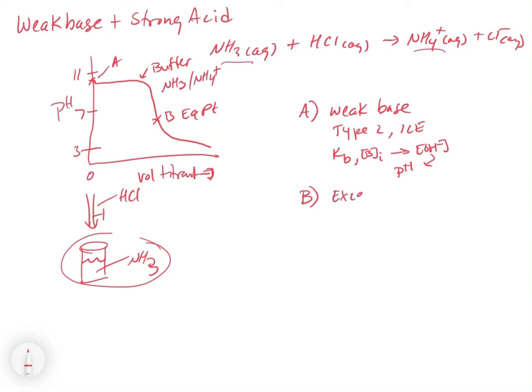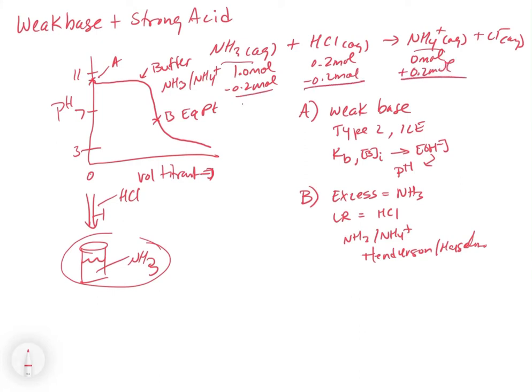What we're going to have here is we're going to have a mixture of ammonia and NH4+, so our excess reagent is going to be our NH3. Our limiting reagent is going to be the HCl, and so we can use Henderson-Hasselbalch. Let's prove that this is the case. Let's say that we have 1.0 moles of the NH3 and let's say we put in 0.2 moles of HCl. When we're in this region before the equivalence point we're going to get 0.8 moles and 0.2 moles, and so we're going to have a mixture of the acid and the conjugate base.